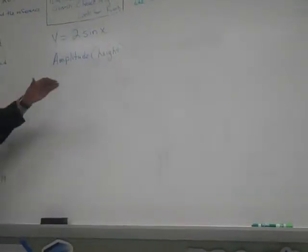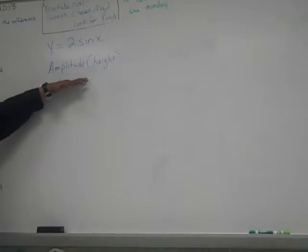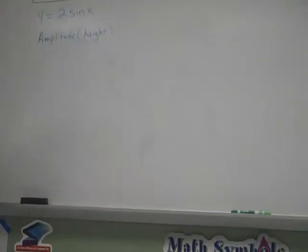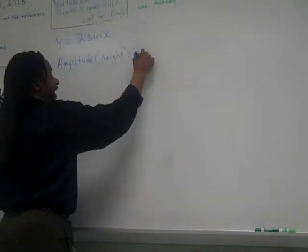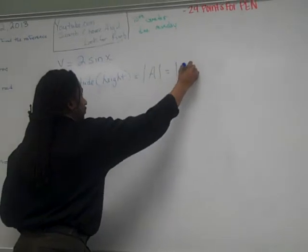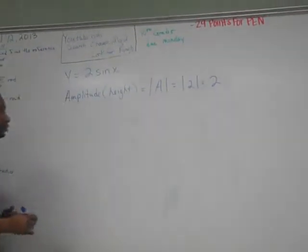Amplitude stands for height. If you put this in parentheses, it will instill in your mind that amplitude means height. That equals the absolute value of A. What is A here? Two. Very good. Therefore my amplitude is just two.